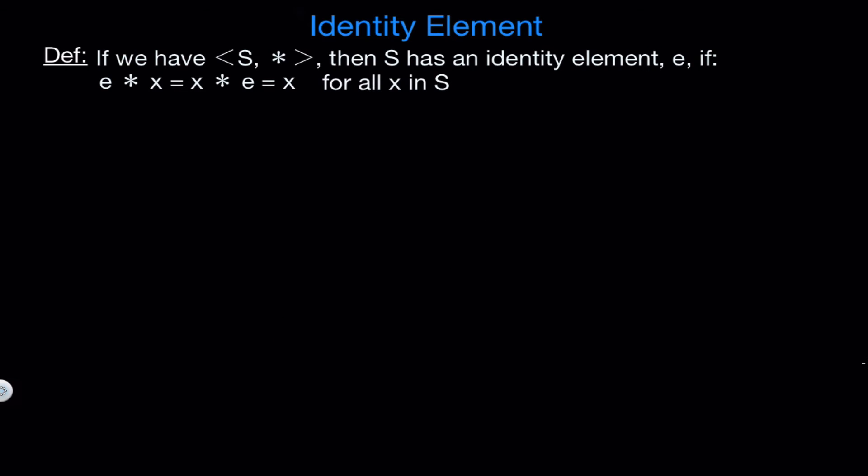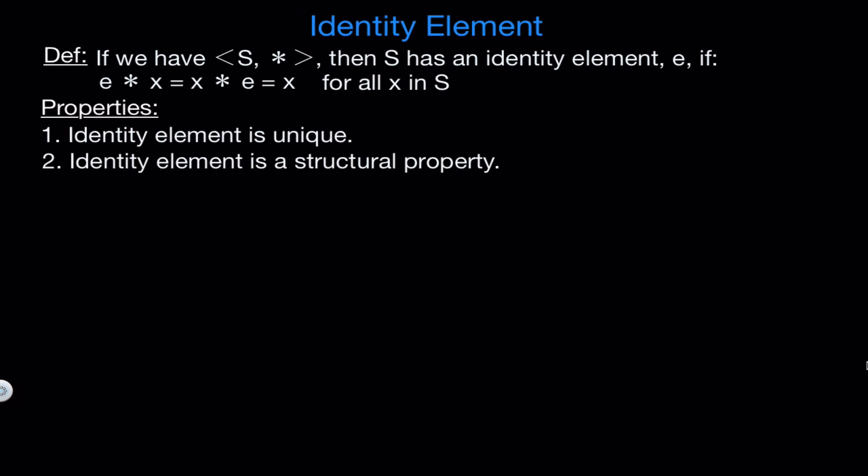Now that we've gone through some examples, I want to abstract it a little bit and go over some properties pertaining to the identity element. There are two important properties to notice. First is that the identity element is unique, meaning a structure may have at most one identity element. The second property is that having an identity element is a structural property, meaning if two structures are isomorphic and one has an identity element, the other must as well.